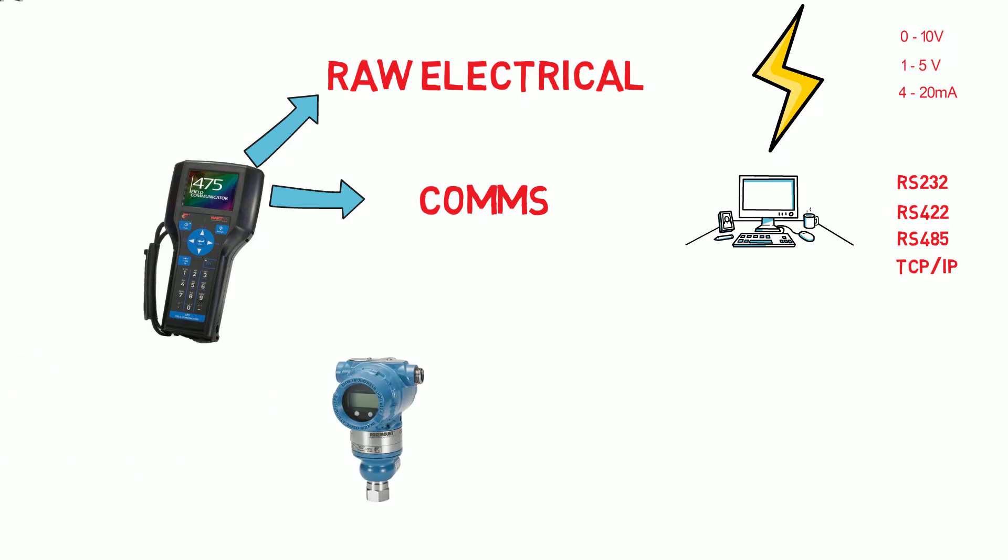This is often used by instrument technicians to interrogate and set up signals with handheld communicators that use HART while the input card the transmitter is connected to uses a 4 to 20 milliamp raw signal.